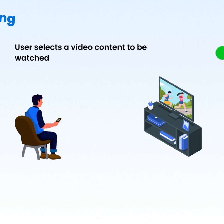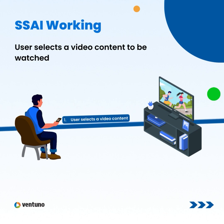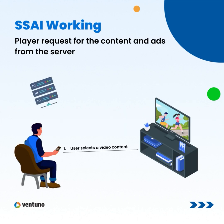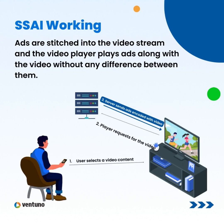Now let's take a look at how SSI works. When your viewer selects video content to be watched, the player requests the content and ads from the server. The server stitches the ads into the video stream, and the video player plays ads along with the video without any difference between them.